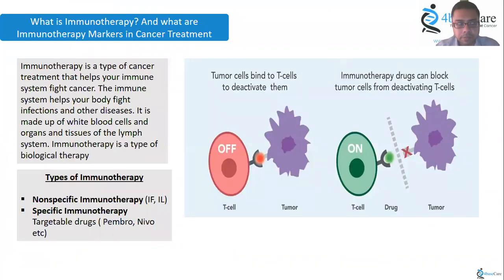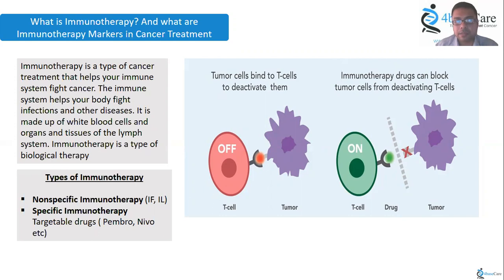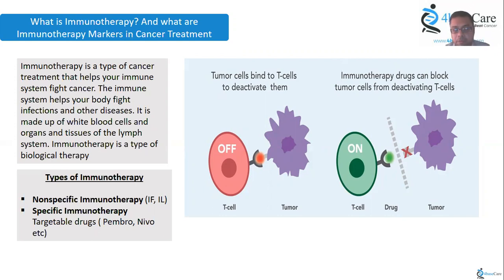Before proceeding, let's understand what immunotherapy is. As the name suggests, immunotherapy utilizes our body's own immune system to fight off different diseases, including cancer. It's a kind of biological therapy where you enhance the immune system you already have to treat or kill cancer cells. There are two types: non-specific immunotherapy, such as interferons and interleukins, and specific immunotherapy.